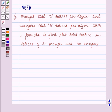Hello and welcome to the session. In this session we will discuss the following question. The question says: Oranges cost A dollars per dozen and mangoes cost B dollars per dozen. Write a formula to find the total cost C in dollars of 20 oranges and 30 mangoes.